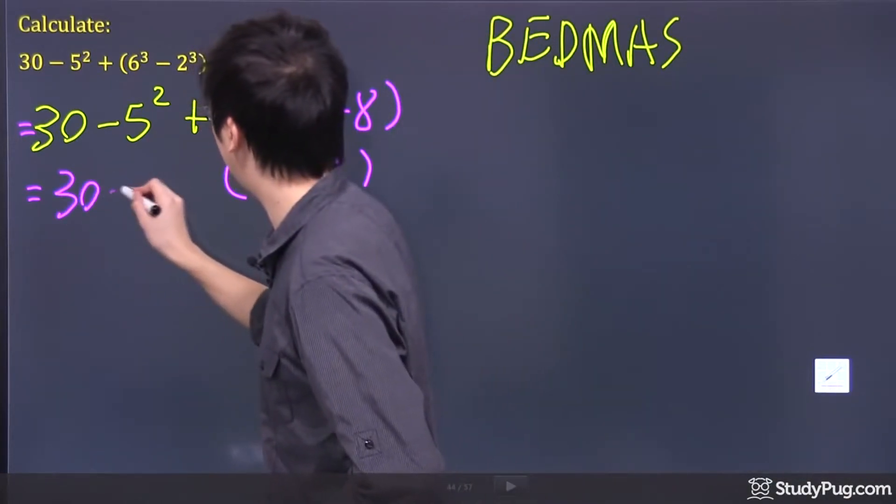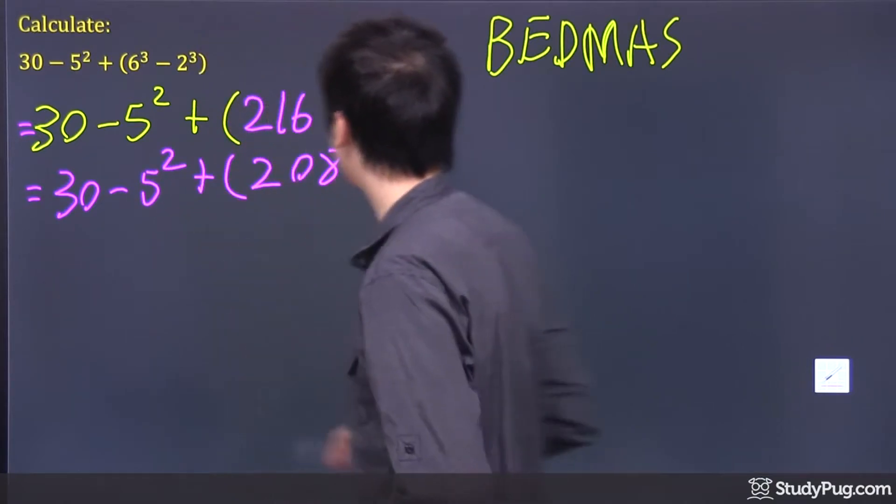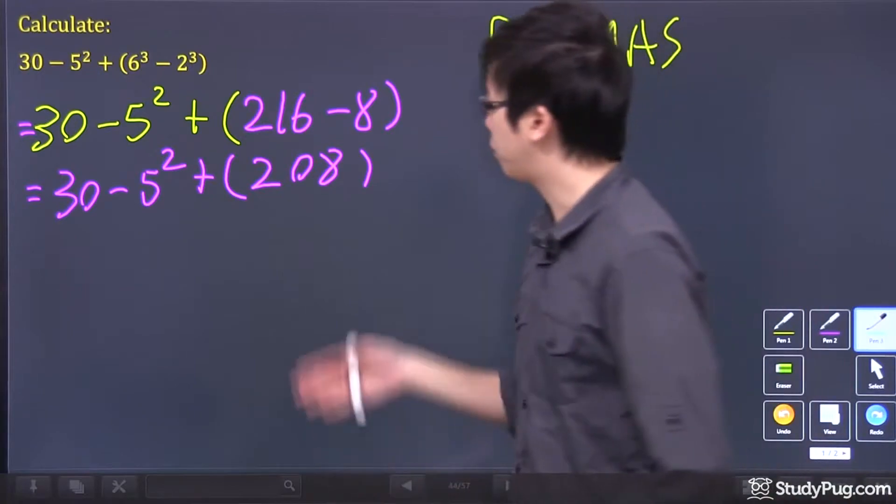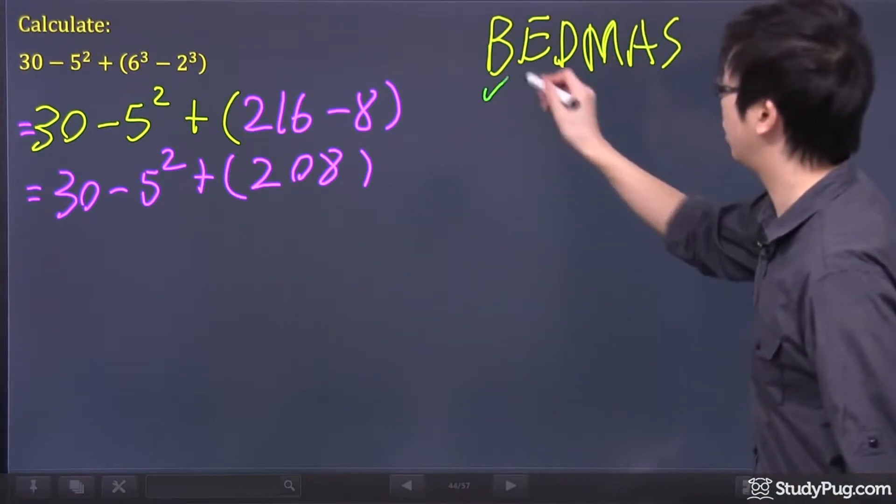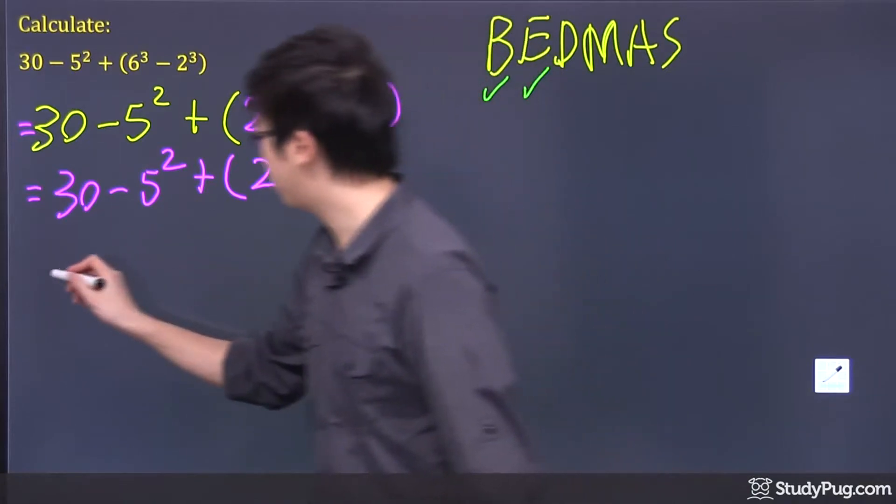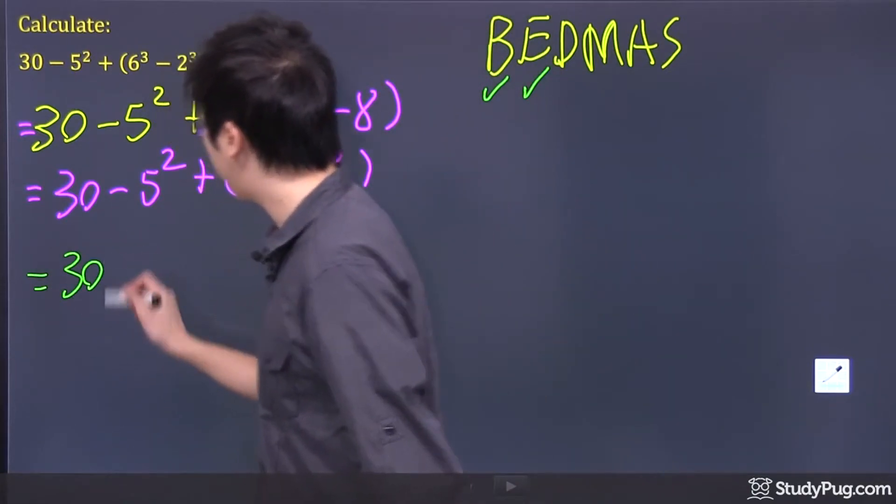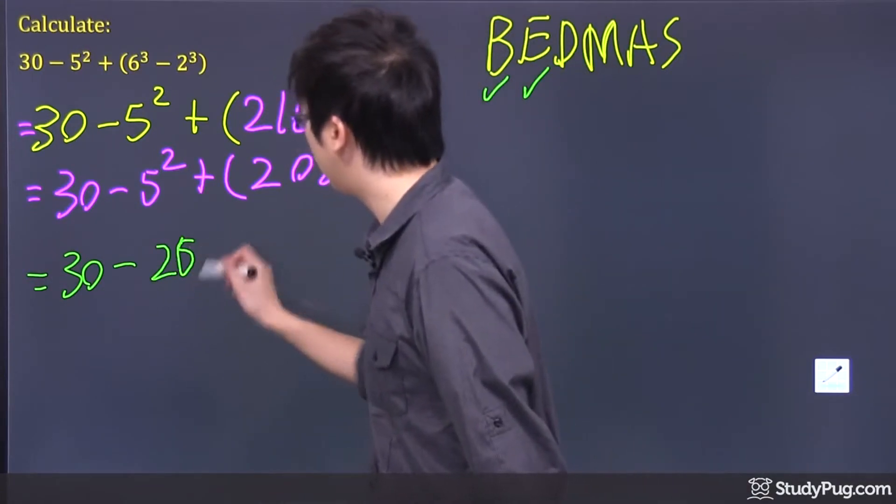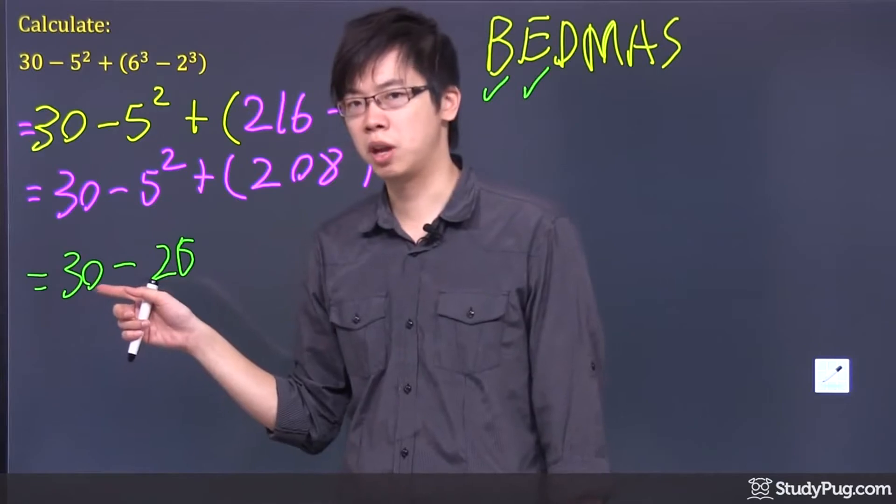Now I'm just going to copy down all the work that I have from the beginning. Then I go to my second step. So after I've done the bracket, so brackets check, did I do everything with exponents yet? Nope. I haven't done this part yet. So I'm going to do it right now. I got 30 in the front. Subtract 5 to the power of 2, which is 25. Now, you have to bring down the sign.